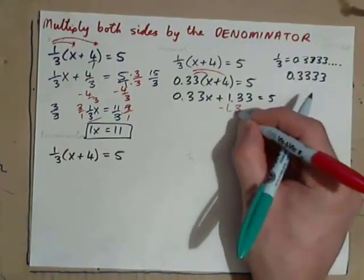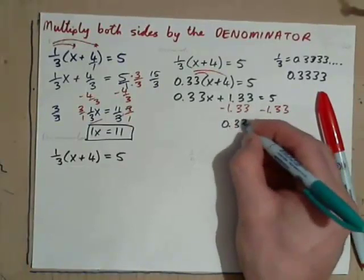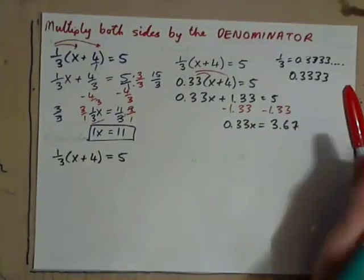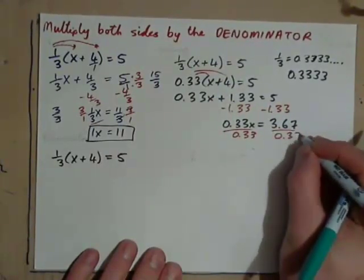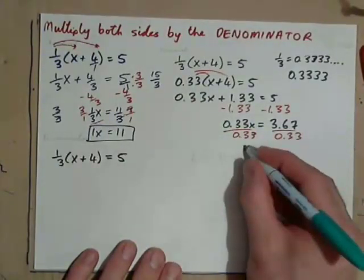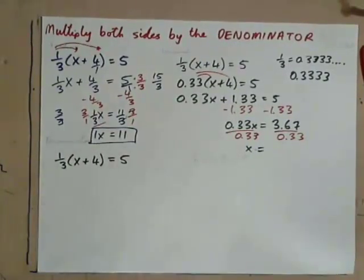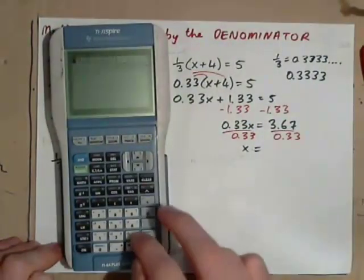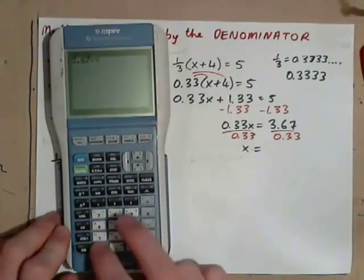Then we go ahead and subtract 1.33 from both sides. And we get 0.33x equals 5 minus that, 3.67. And again, there's a lot of writing, isn't it? Apart from the fact that we're not going to get a perfect answer because we had to round the decimal at the beginning, there's a lot of writing. X equals, and plug that in the calculator because it'll be a little bit off. Turn it on. Clear. 3.67 divided by 0.33.